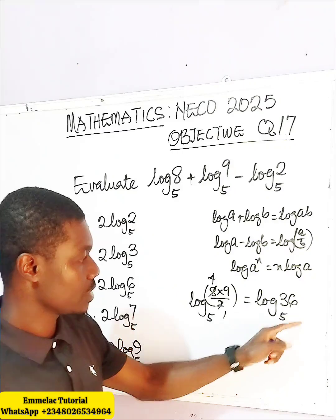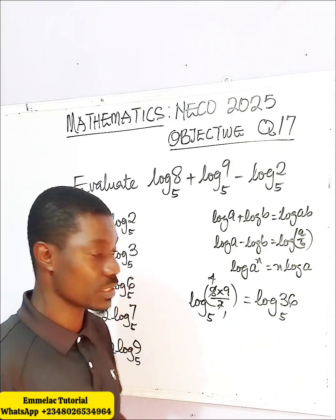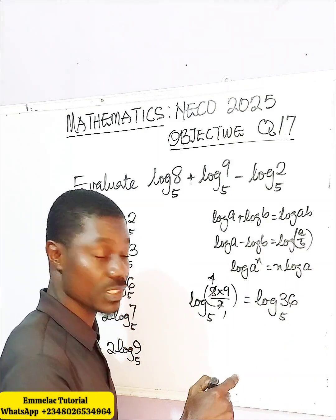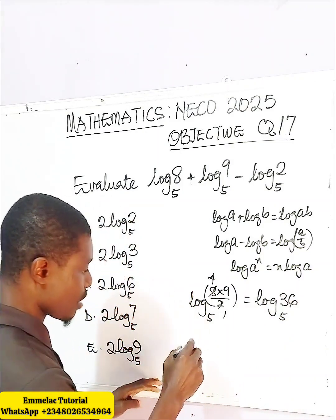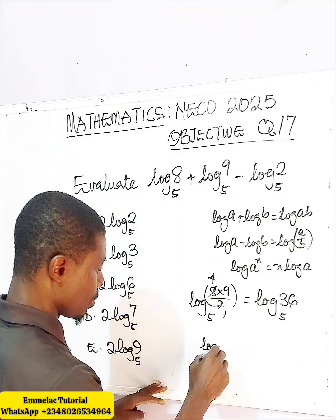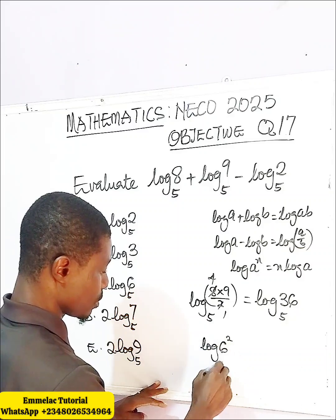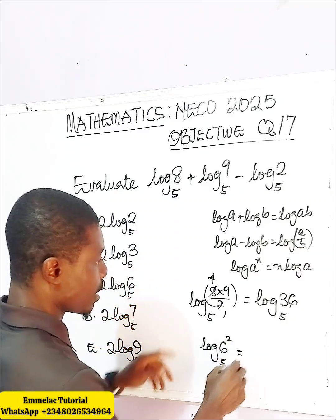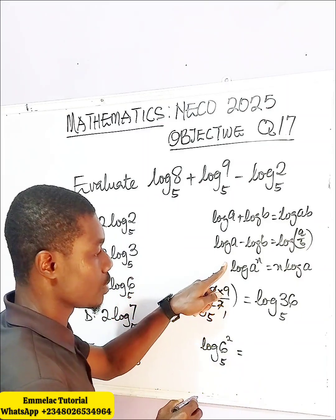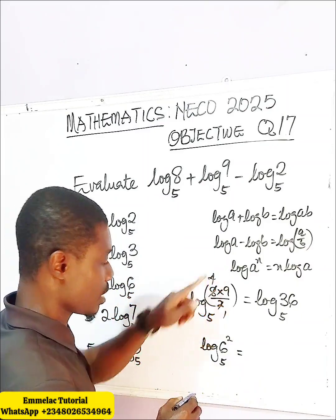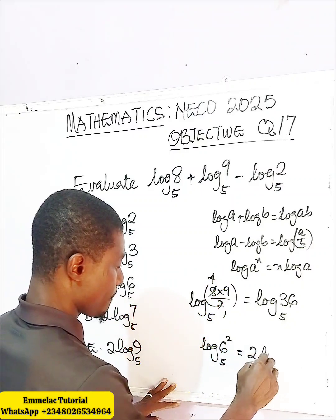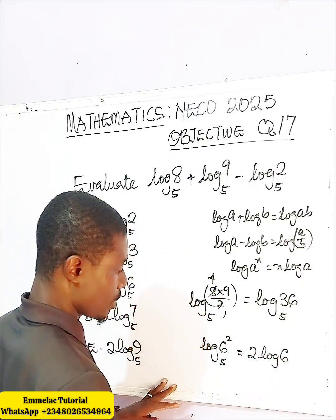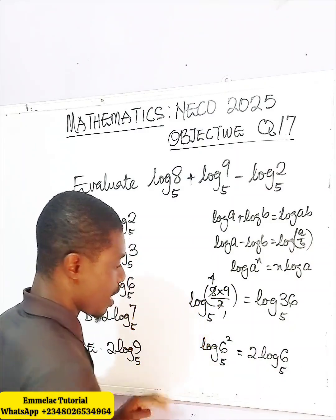Now let us reduce this to a base of 6. We rewrite 36 as 6 squared, so we have log base 5 of 6 raised to the power of 2. Applying the power rule, this gives us 2 log base 5 of 6.